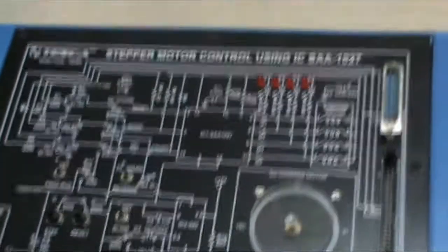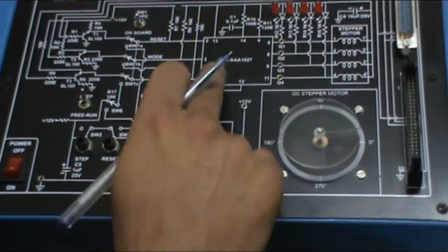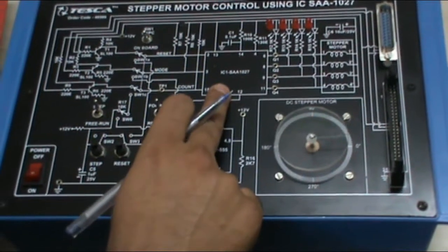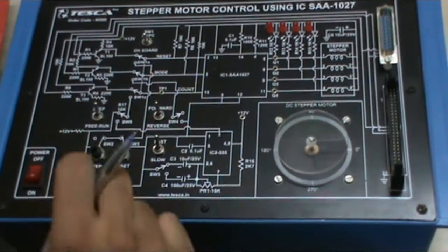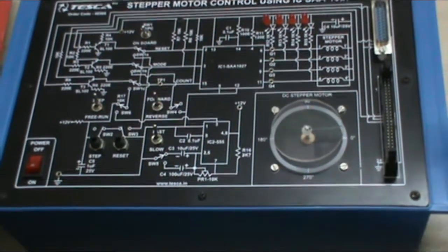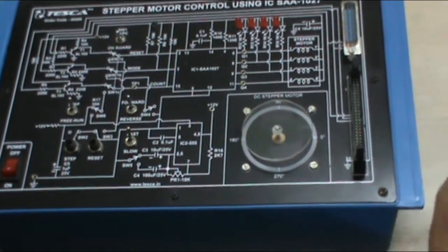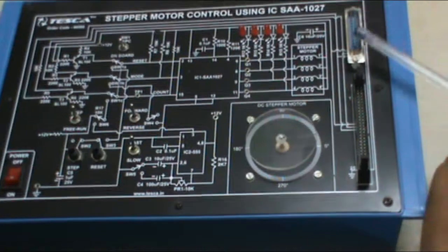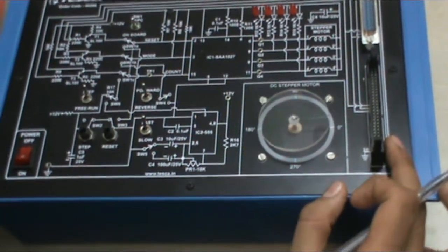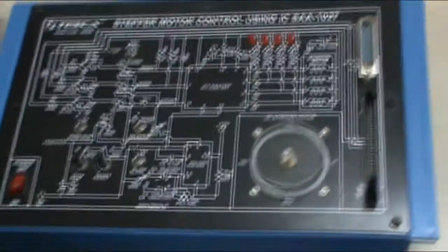These are the various functions of this kit. We have a 555 timer IC, this is our IC SAA1027 which is a stepper motor controller used to control the stepper motor. These are the various buttons, this is the power main on-off switch. These are the sockets for microprocessor and PC connection. Through this we can connect a 25-pin wire with the PC, and through this we can connect a 50-pin microprocessor 8085 or 8086.